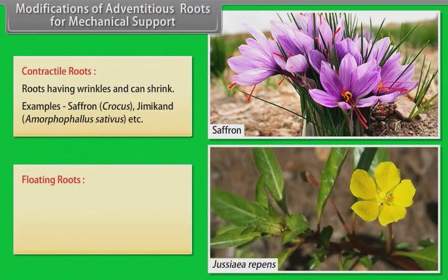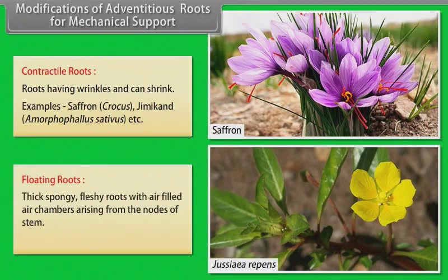Floating roots: Thick, spongy, fleshy roots with air-filled air chambers arising from the nodes of stem. Example: Jussiaea (water primrose).